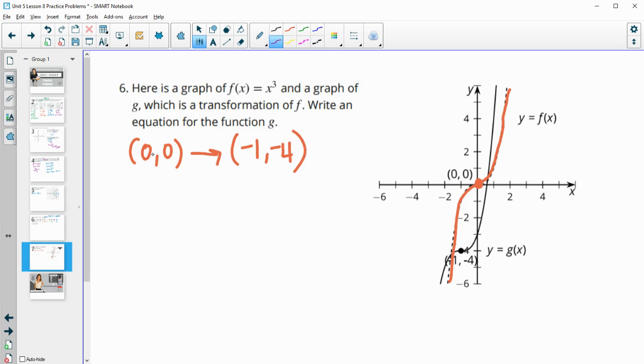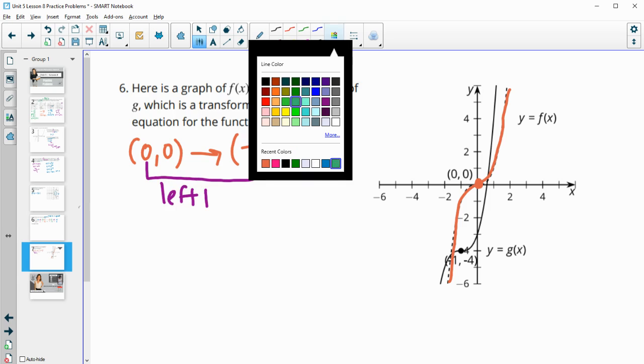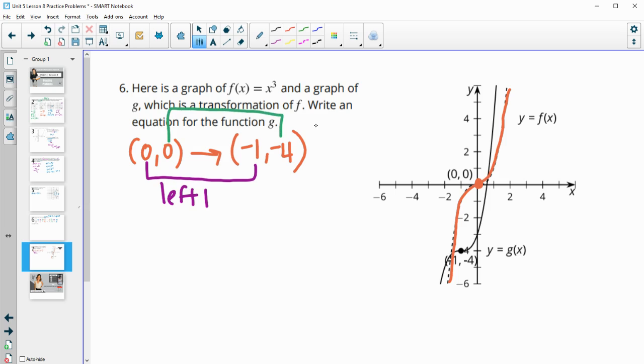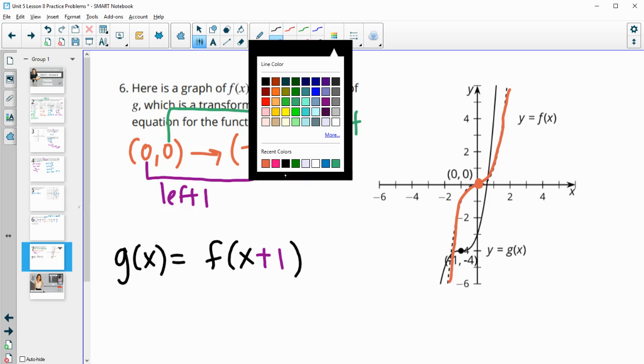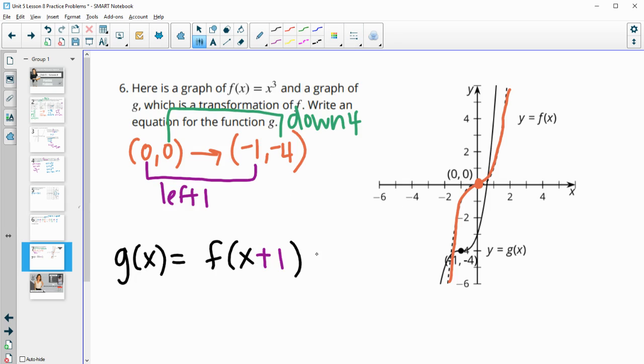So our x movement is moving to the left 1 and then our y movement is moving down 4. So when we write this out our g of x function is going to be equal to f of x plus 1, because it's going to the left 1, and then down 4.